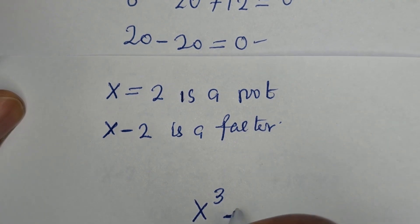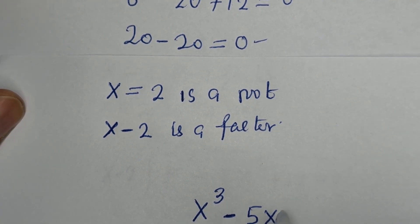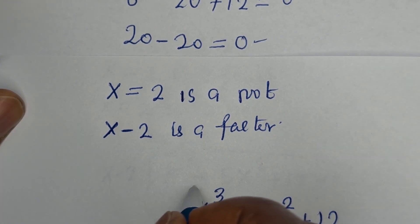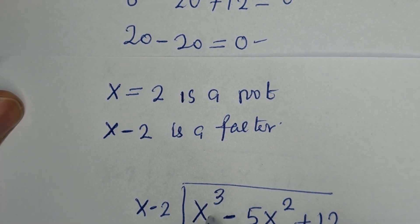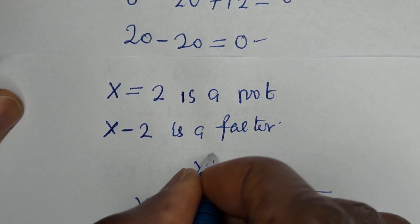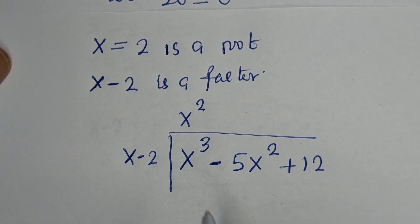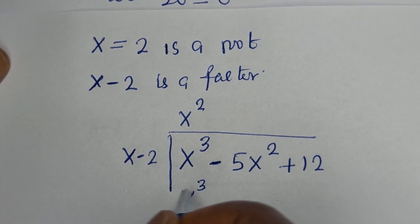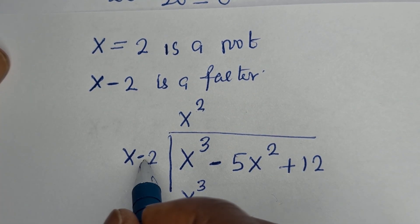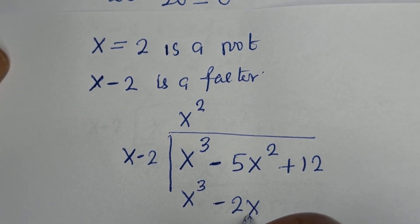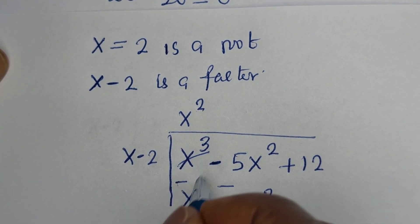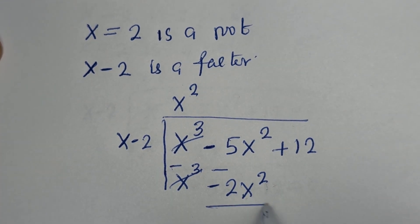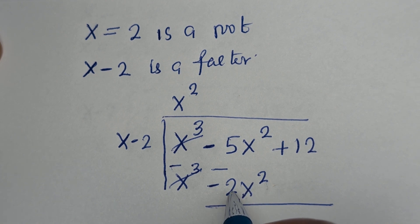Now, s cubed minus 5s squared plus 12 divided by s minus 2. s goes into s cubed giving s squared. s squared multiplied by s gives s cubed, and s squared multiplied by minus 2 gives minus 2s squared. We then have minus 5s squared plus 2s squared, which is minus 3s squared.